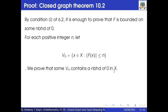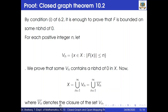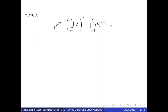Now X is equal to the union from n=1 to infinity of Vn, which is equal to the union from n=1 to infinity of V̄n, where V̄n denotes the closure of Vn. Taking complements on both sides, we have the complement of X equal to the intersection from n=1 to infinity of V̄n complements, which is equal to the empty set ∅.